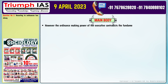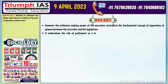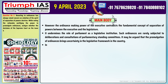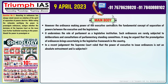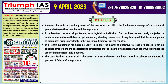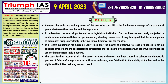Main body. Number one: The ordinance-making power of the executive contradicts the fundamental concept of separation of powers between the executive and the legislature. Number two: It undermines the role of Parliament as a legislative institution. Such ordinances are rarely subjected to deliberations of parliamentary standing committees, bringing uncertainty into the legislative framework. Number three: In a recent judgment, the Supreme Court ruled that the power of the executive to issue ordinances is not an absolute entrustment and is subject to satisfaction that such action was necessary — ordinances are not immune from judicial review. Number four: The court further recognized that the power to make ordinances has been abused to subvert the democratic process. A failure of a legislature to confirm an ordinance was fatal both to the validity of the law and to the rights and liabilities that may have accrued from such a law.